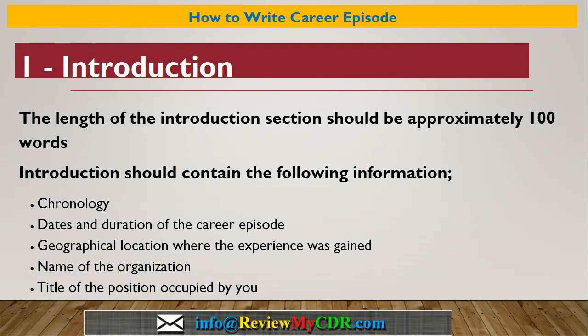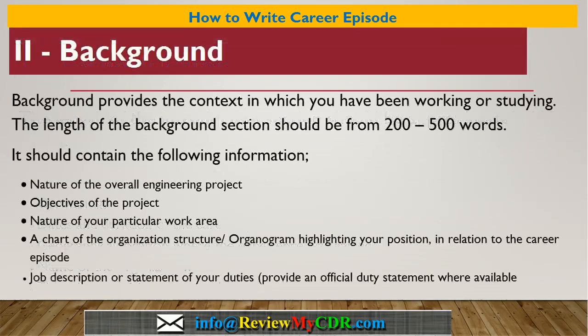The title of the position occupied by you. The second section is Background. Background provides the context in which you have been working or studying. The length of the Background section should be from 200 to 500 words. It should contain: the nature of the overall engineering project, objectives of the project, nature of your particular work area, and a chart of the organization structure or organogram highlighting your position.